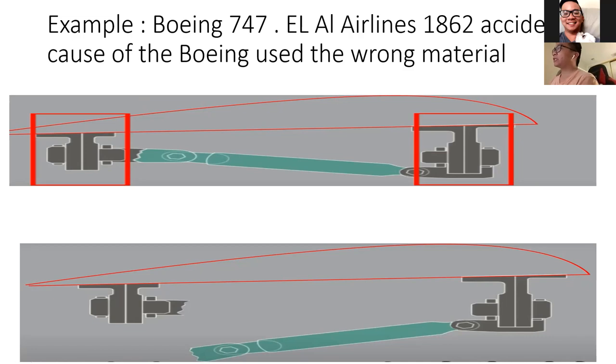The case of an engine falling off the plane is something the producer should have considered when designing the plane. According to the design, if an engine falls off, the first two locking pins should break so that the engine will fall directly to the ground.